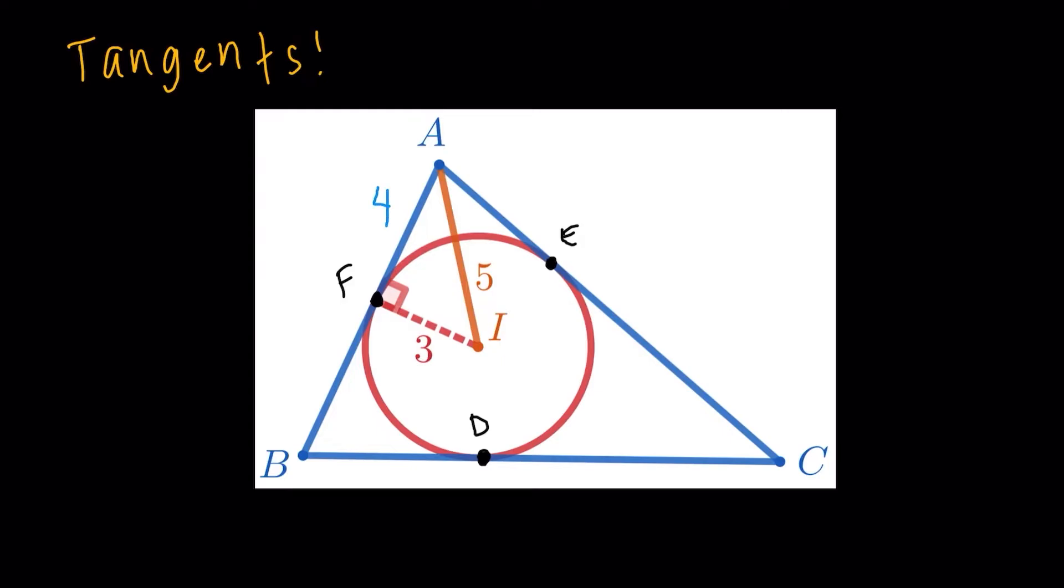we do have the nice property of tangents. For example, AF and AE, they are both tangents from an external point A. So they're both tangents to that red circle, the incircle. So AE should also be 4.